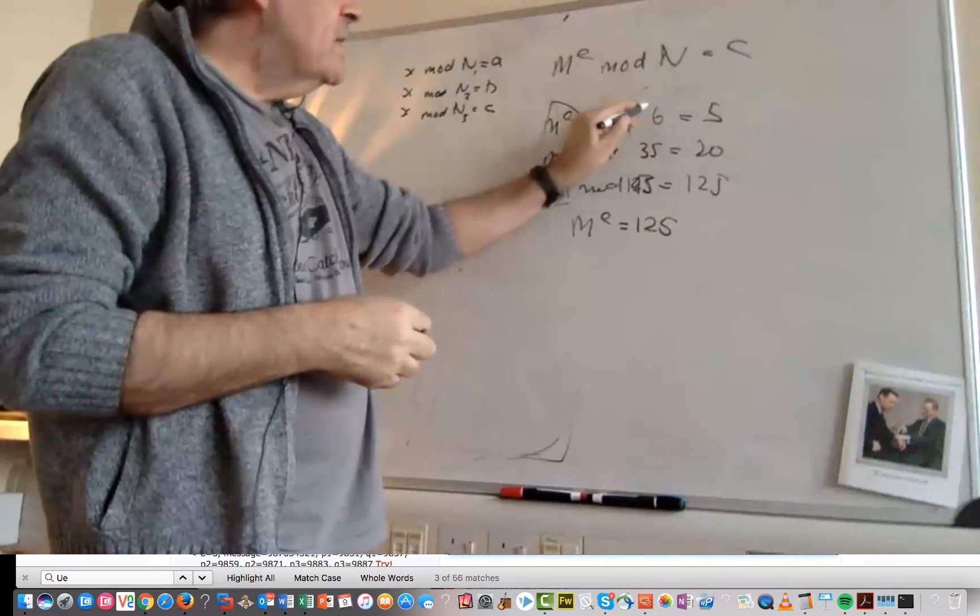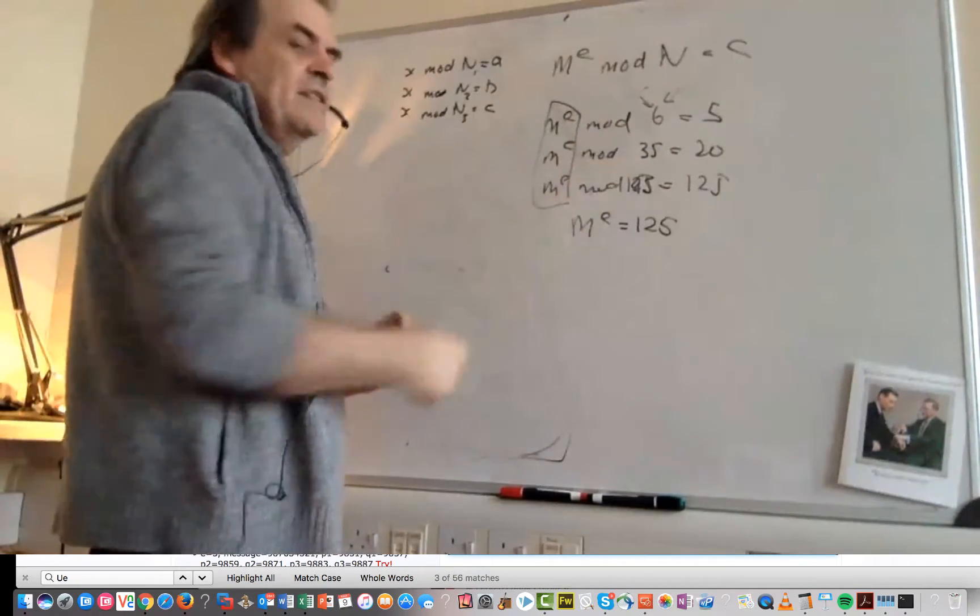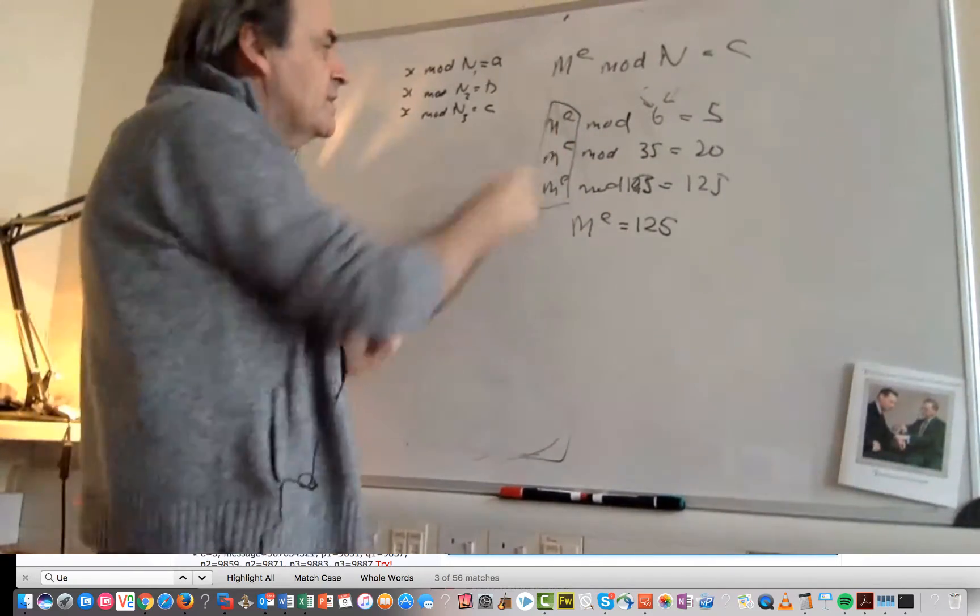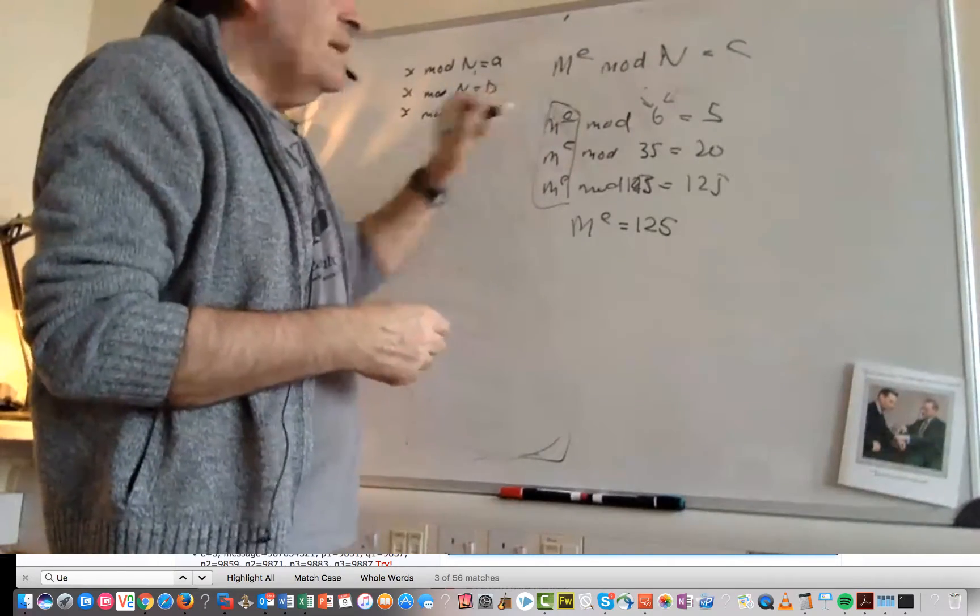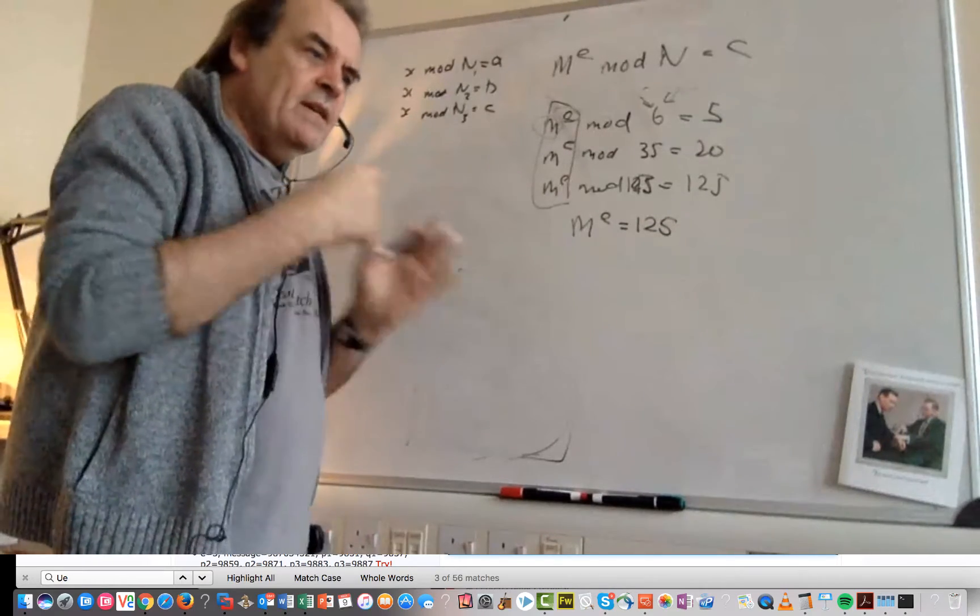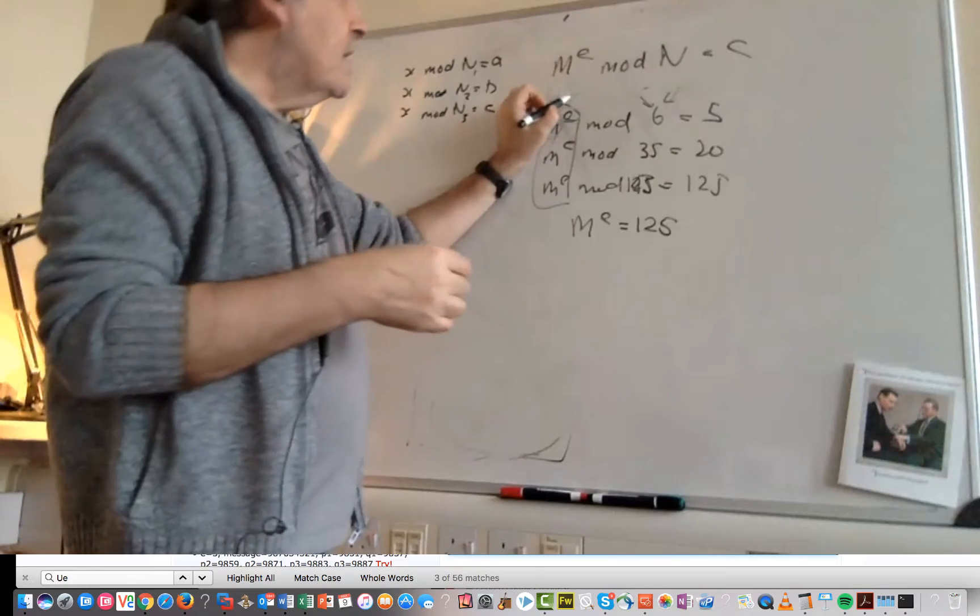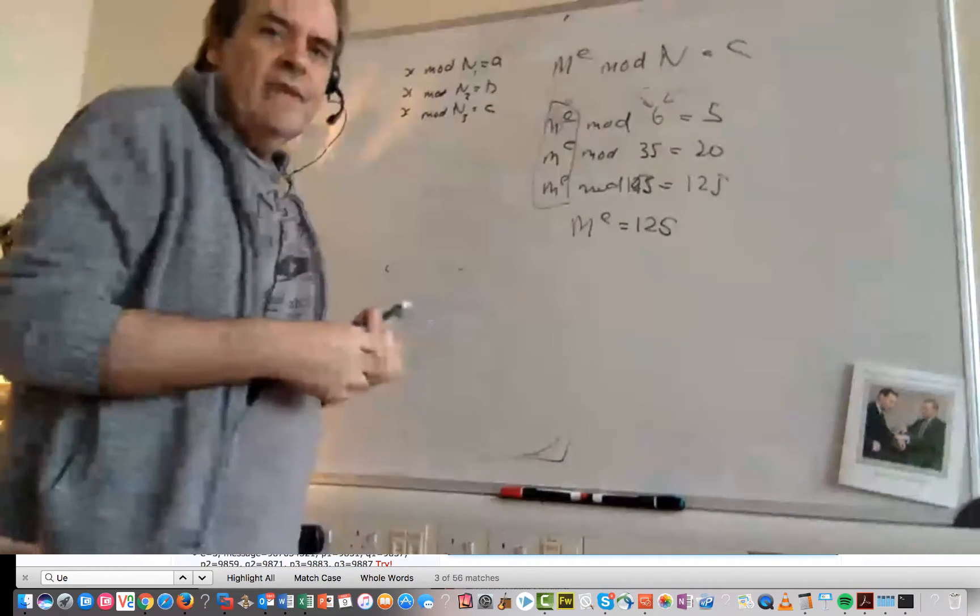So all we've done is made sure that the user is using three different public keys but we use the same E value with the same message. So the message might be a standard message that's been sent but we use the same E value for each one.